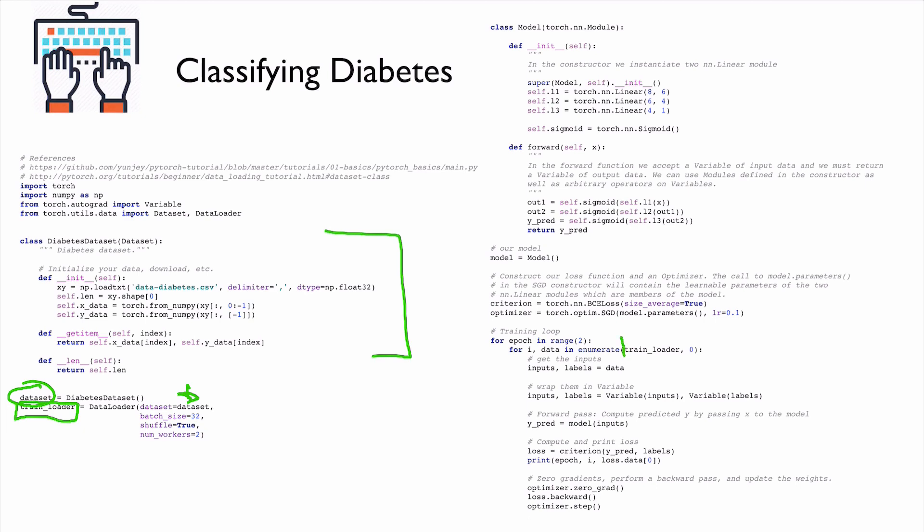And this train loader is just used in our training loop. So, here inside of for loop, we just use them. And each iteration, we get one batch. So we divide them as input and labels, and we use them for our training.